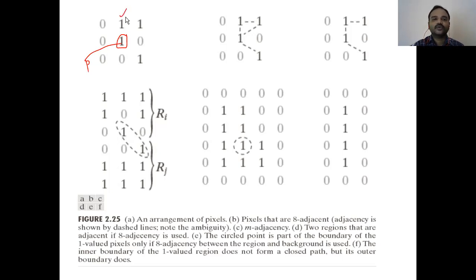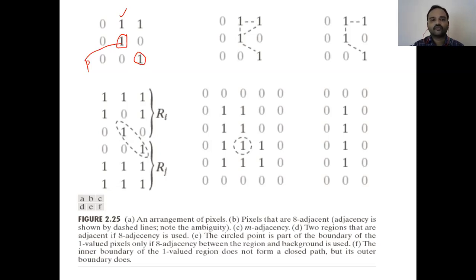We can consider any of the other adjacent pixels and verify the condition. If we consider this pixel as q, its value is 1 and it is in the four-neighbors of p, so they are four-adjacent. If we consider this other pixel as q, it is not in the four-neighbors of p — it falls in the diagonal neighbors of p, so we are not interested in it. Similarly, this pixel is also in the diagonal neighbors and not in the four-neighbors of p.